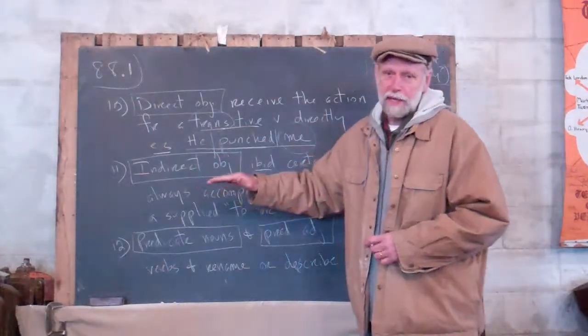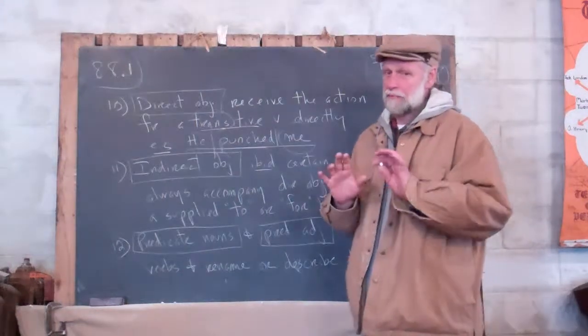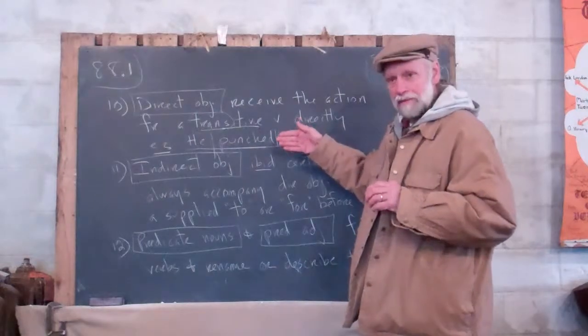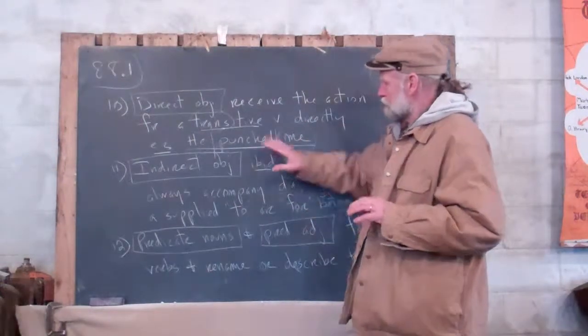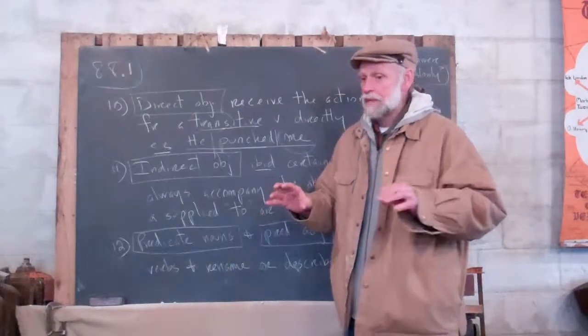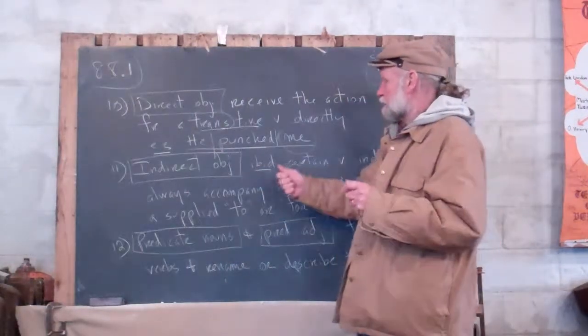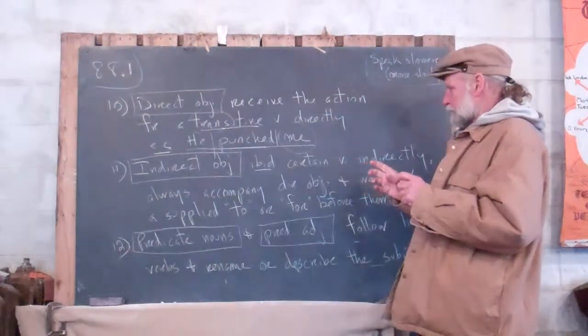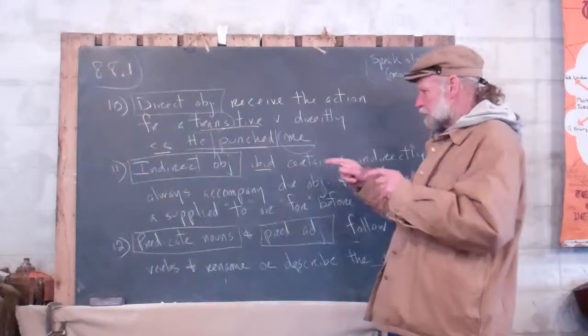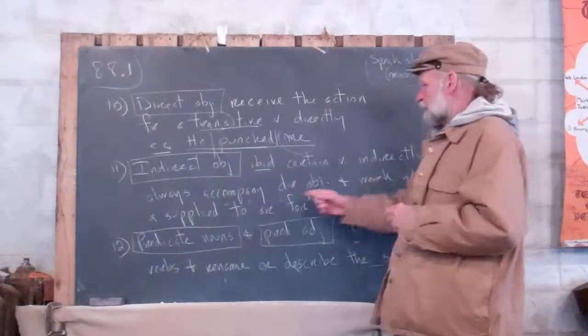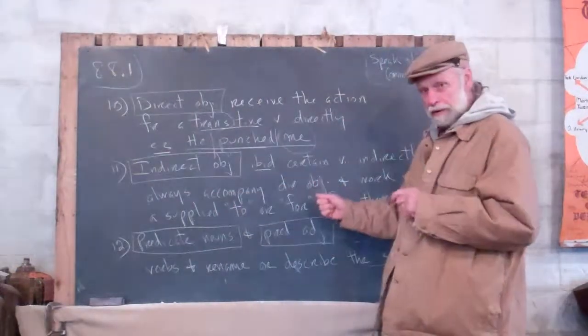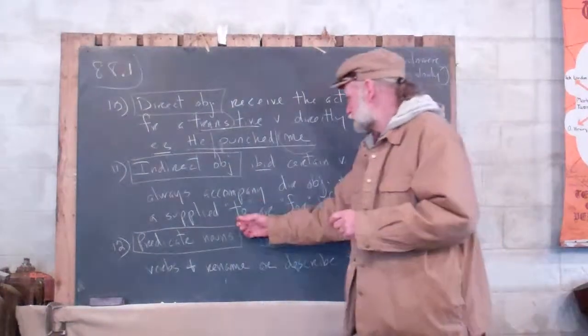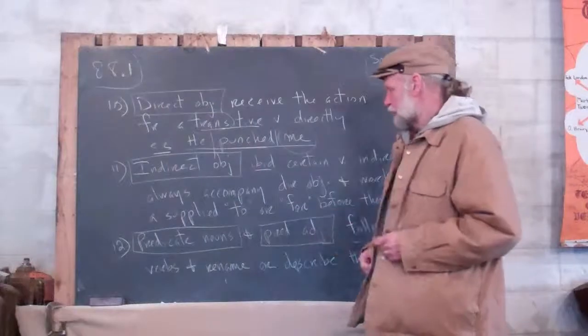I should back up and tell you that those have been intransitive verbs that I've been working with so far, because I didn't want to deal yet with a direct object. Now, there are a few transitive verbs where the action can go to an indirect object. They are always accompanied with a direct object, and they work with a supplied 'to' or 'for' before them.